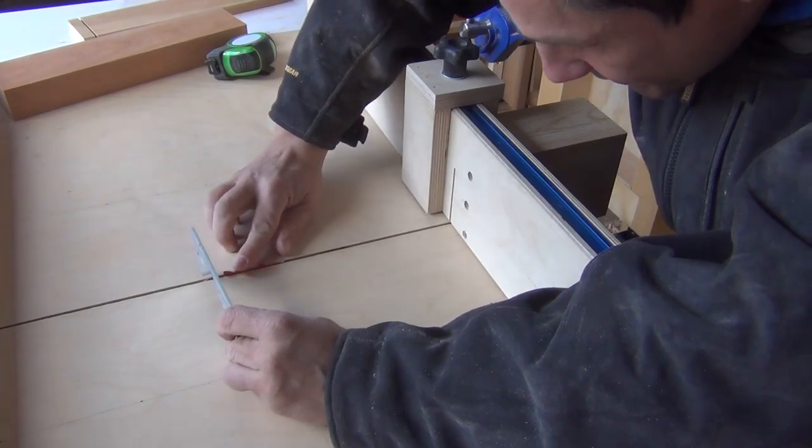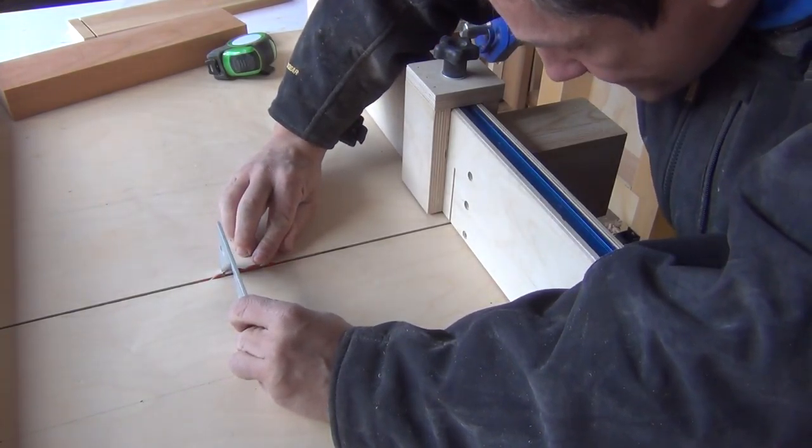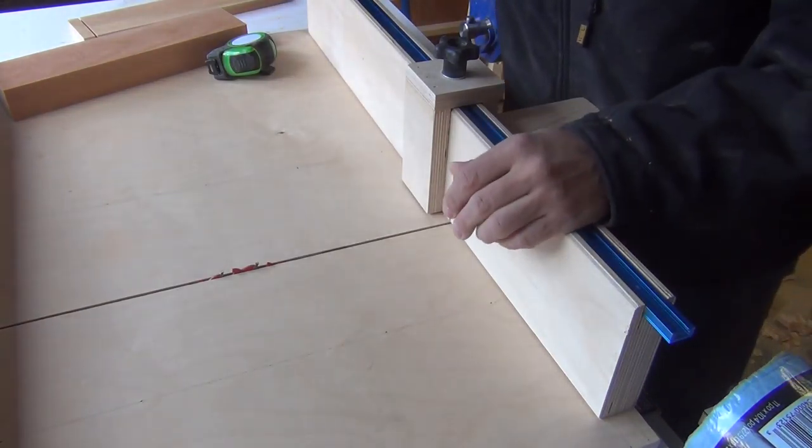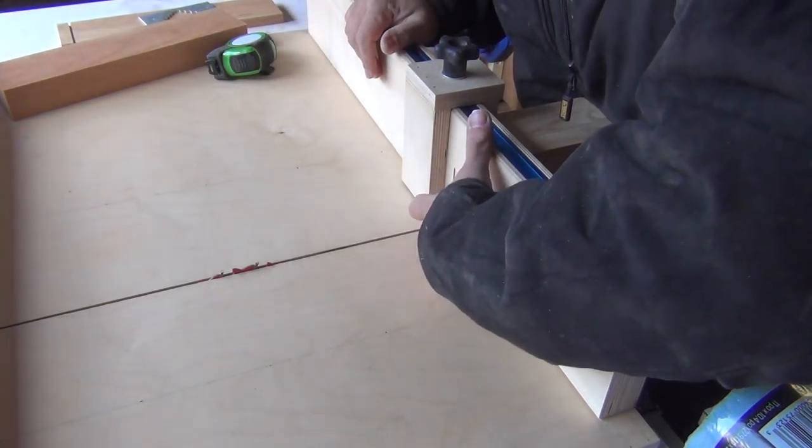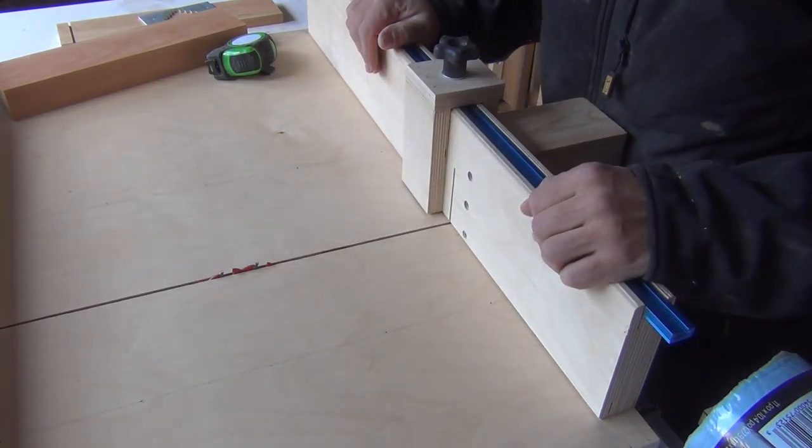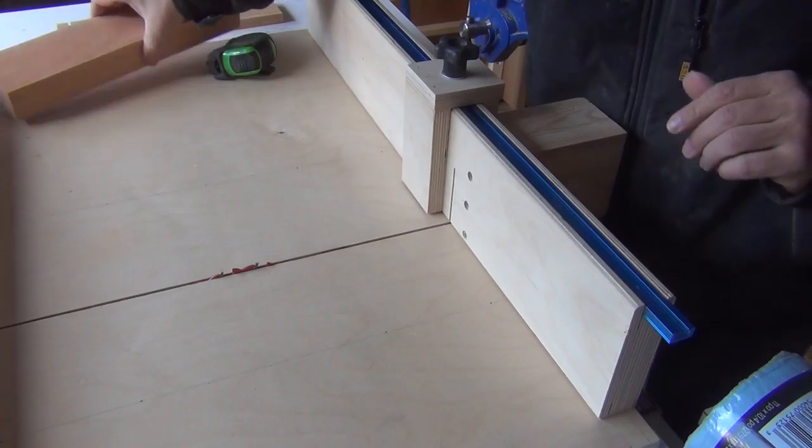So what that means is I can set the height of the blade to about half an inch, half an inch above the sled. Let's see how that works.